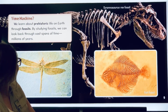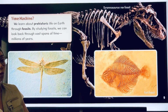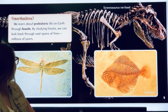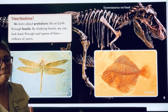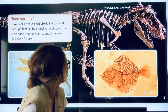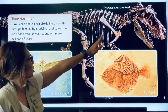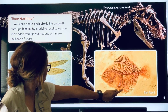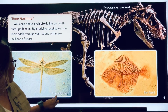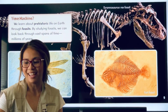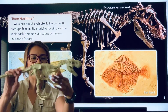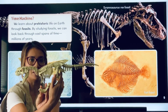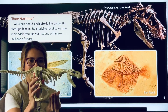We learn about prehistoric life on Earth through fossils. By studying fossils, we can look back through vast spans of time — millions of years. Here they show a Tyrannosaurus rex fossil, a fish fossil, and a dragonfly fossil. My son has a fossil model of a T-Rex which shows the bone structure of it. It's pretty cool.